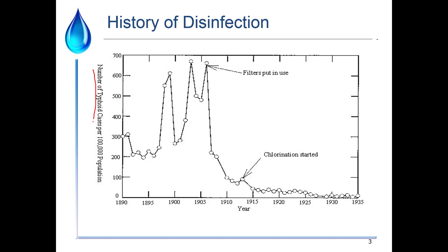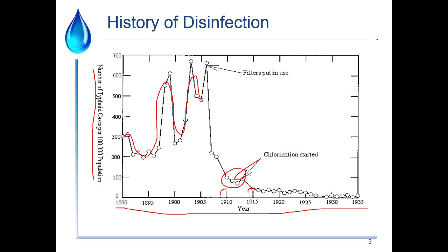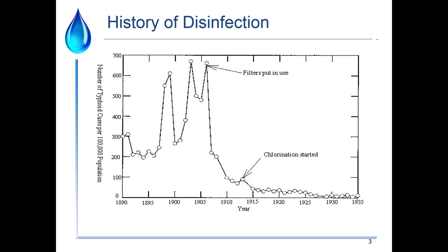When we look at the number of typhoid cases per 100,000 population over many decades, we see there were a lot of typhoid cases back in the day. Then around 1910 to 1915, we started doing things like chlorination, and typhoid dropped off dramatically. This has really been one of the major advances in human society — taking pathogens out of our water. Typhoid is just one example of a pathogen we've removed.